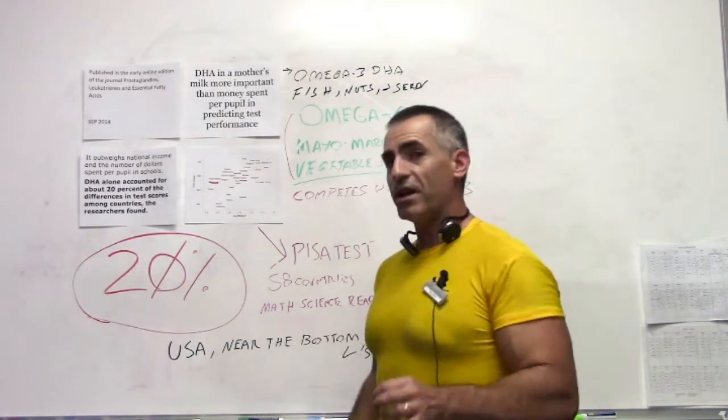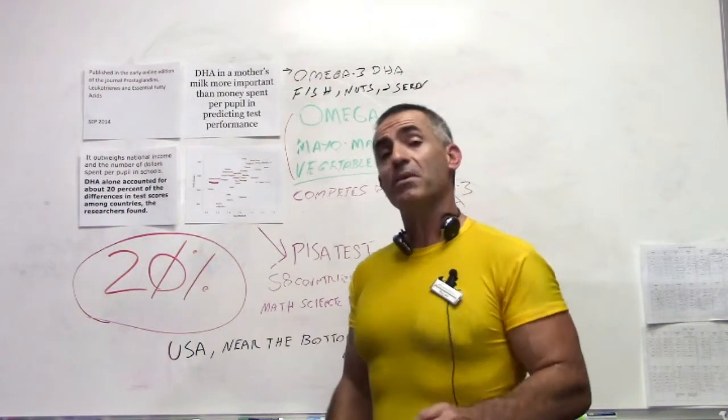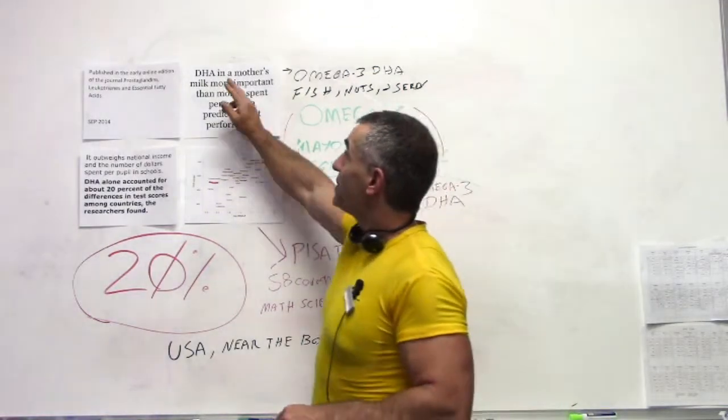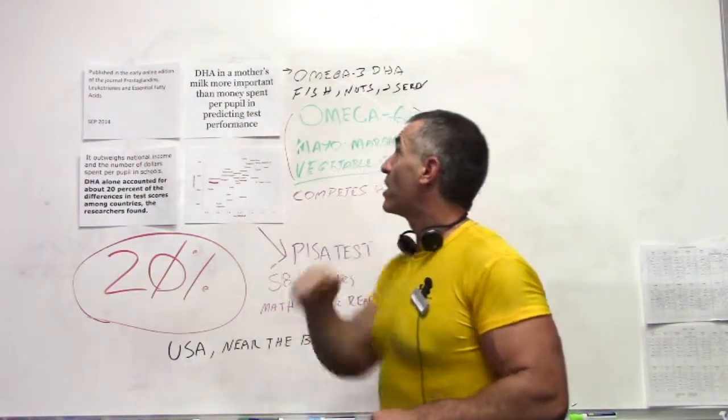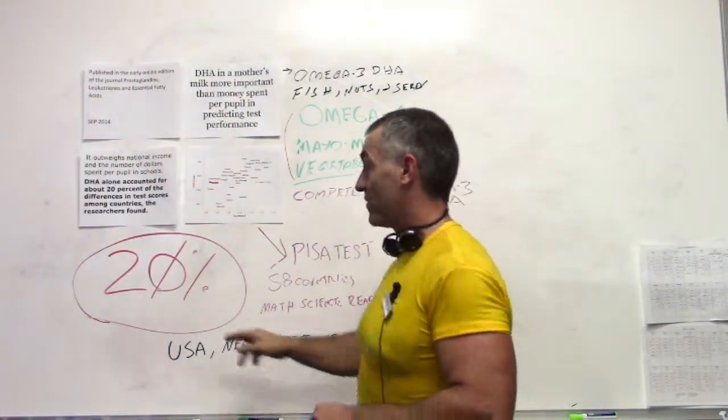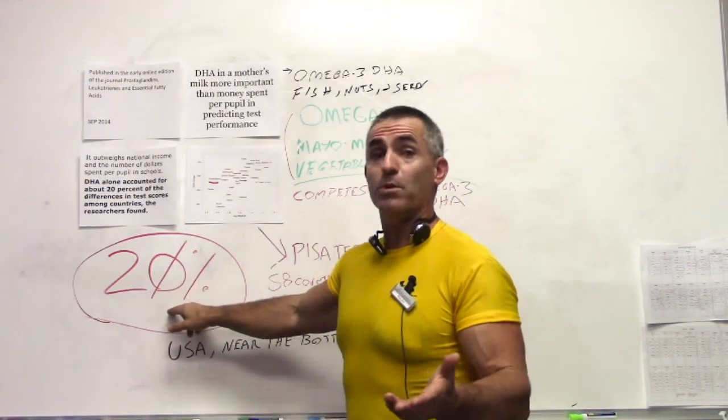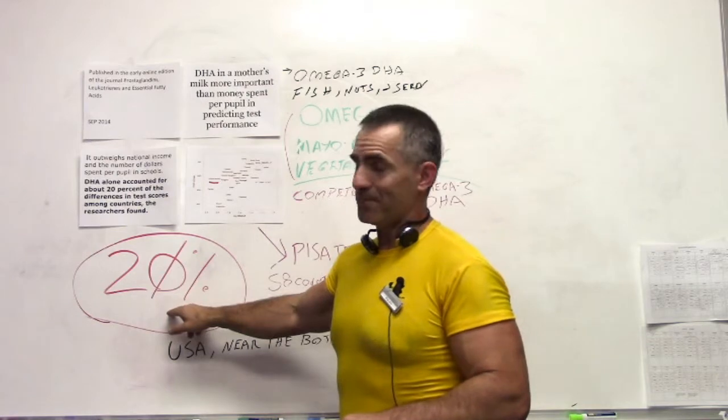So we're looking at the future intellect and test performance of our children. You better make sure in the maternal diet that you have tons of DHA in that mother's milk because that's going to make a huge difference, at least a 20% difference in future test scores or test score potential of those children. Thank you.